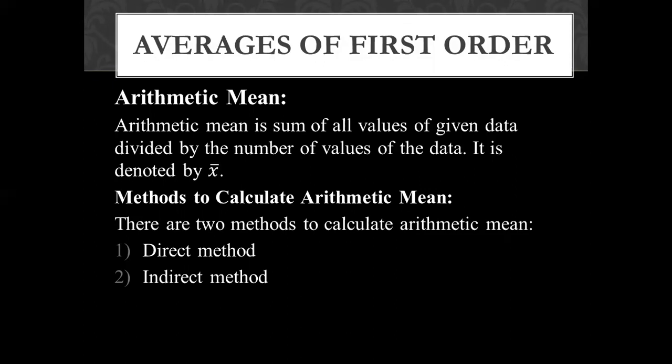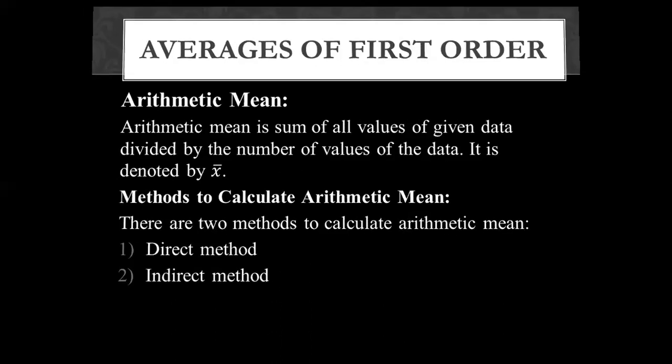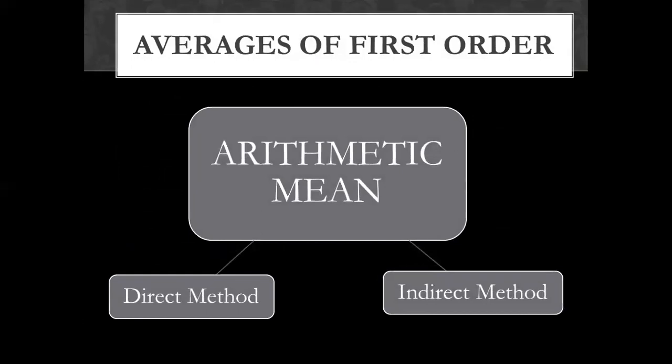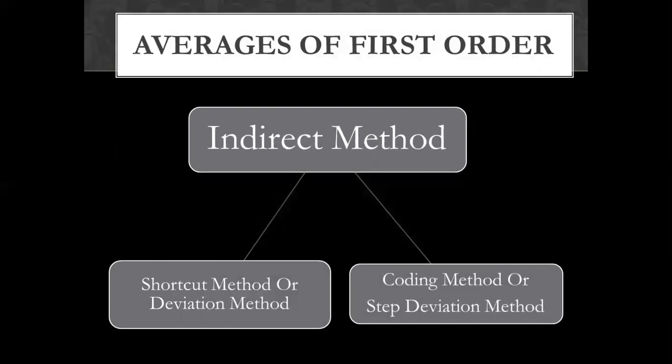This is the average we commonly use. The arithmetic mean is calculated by two methods: one is the direct method and one is the indirect method.